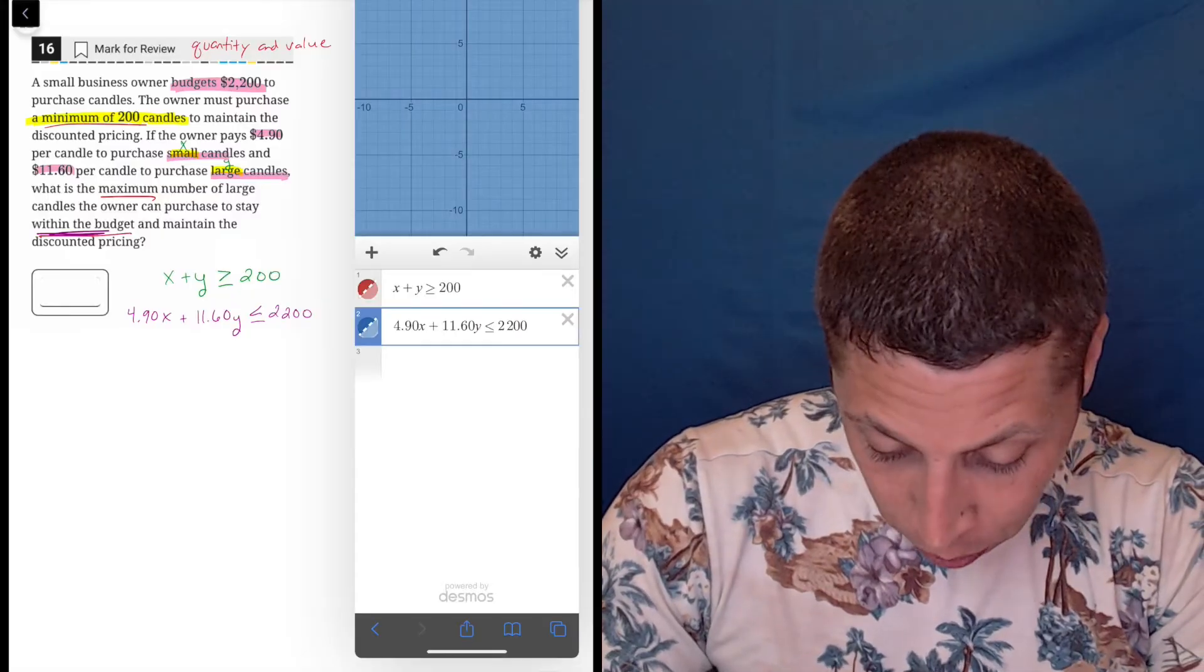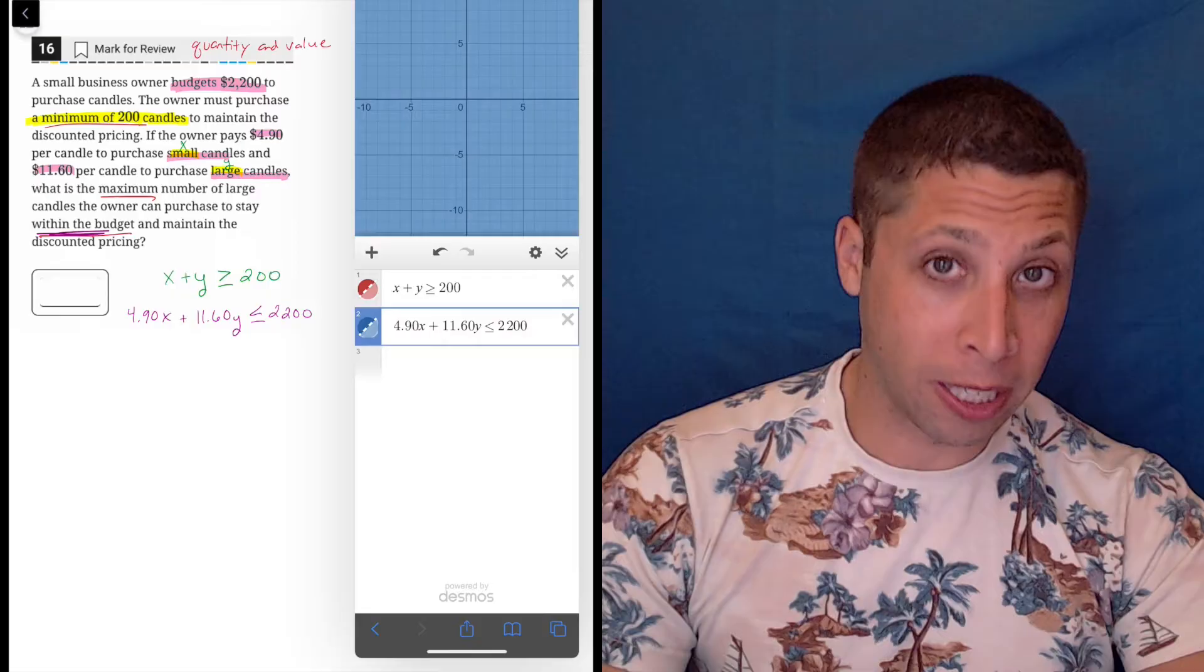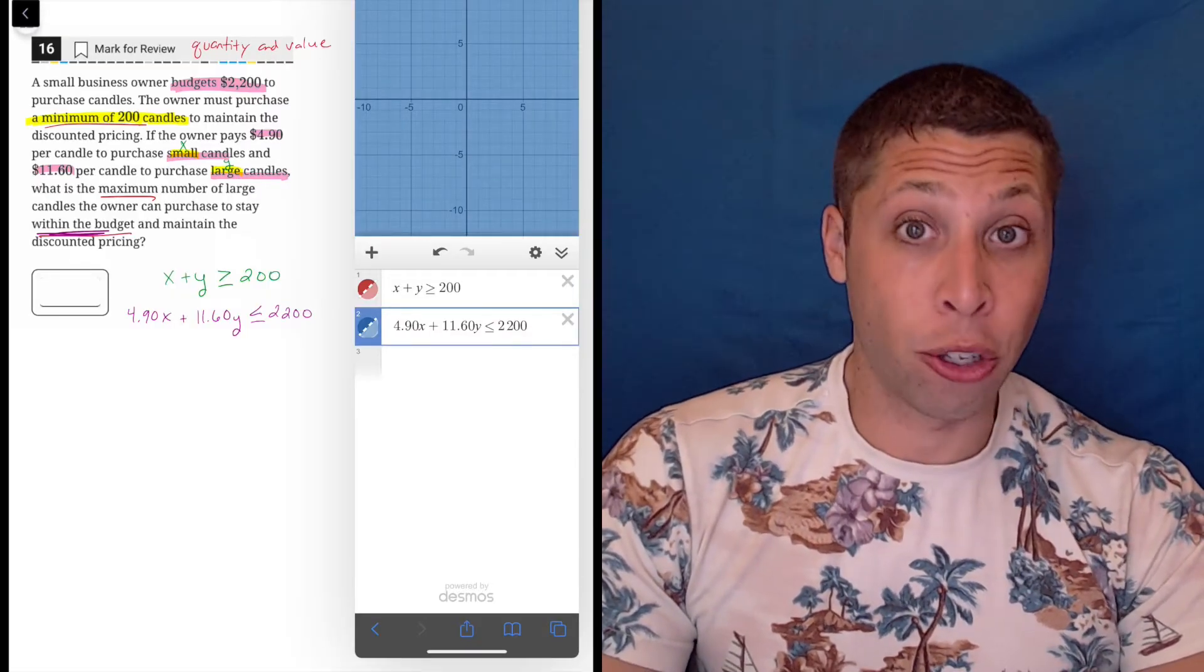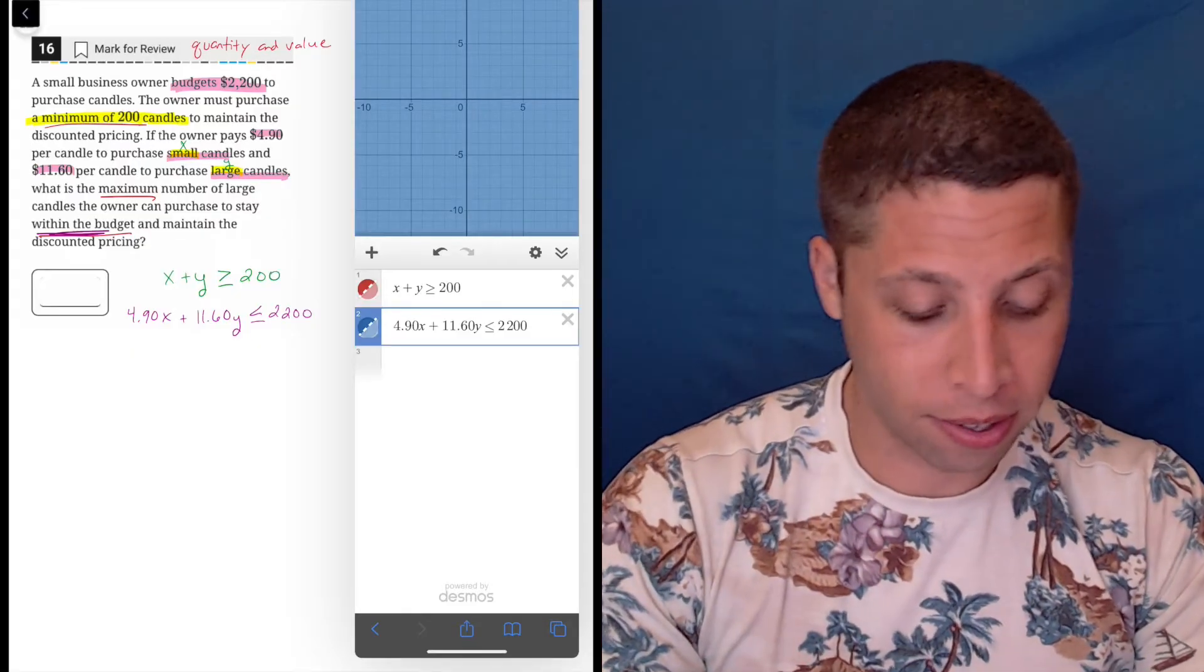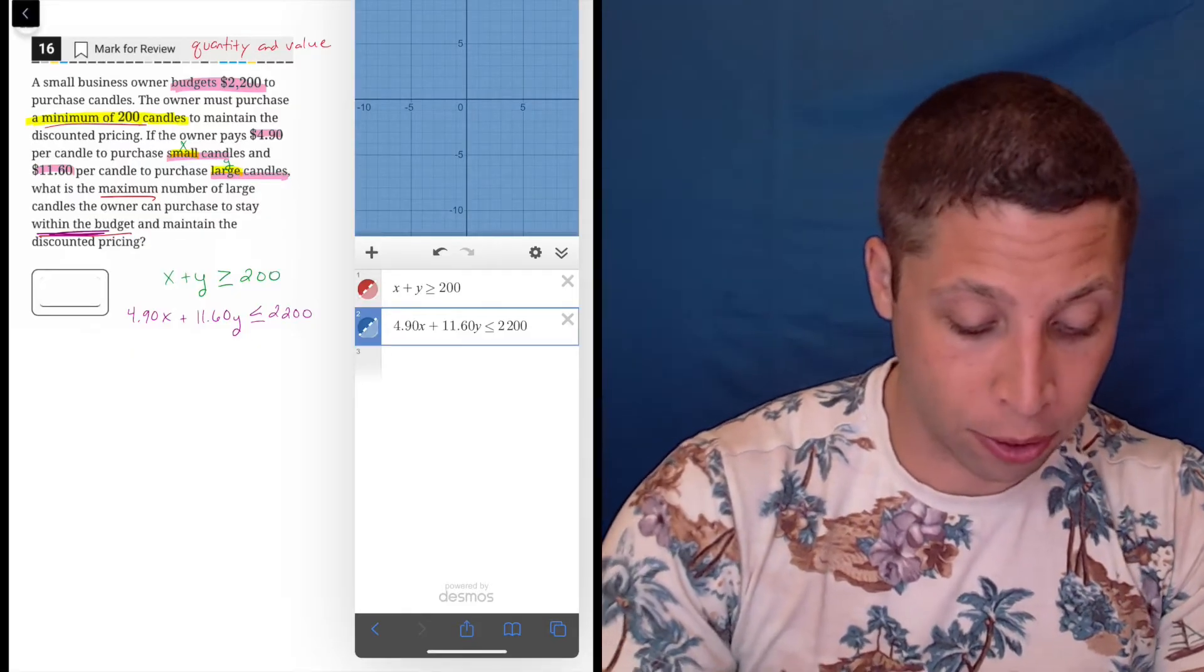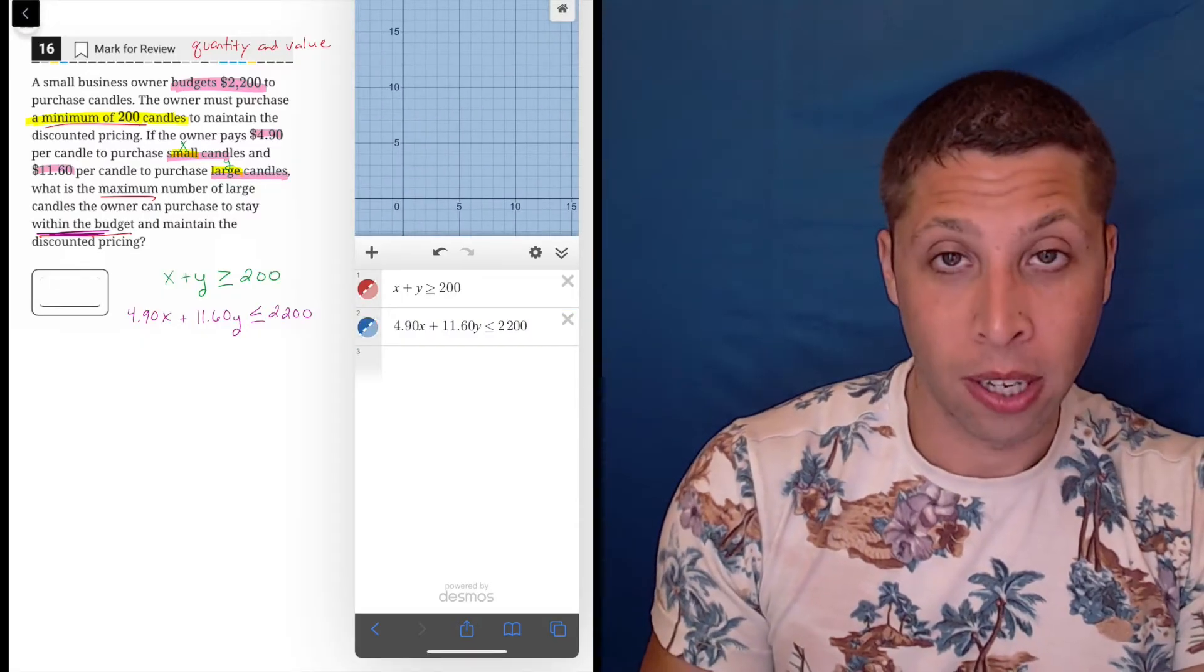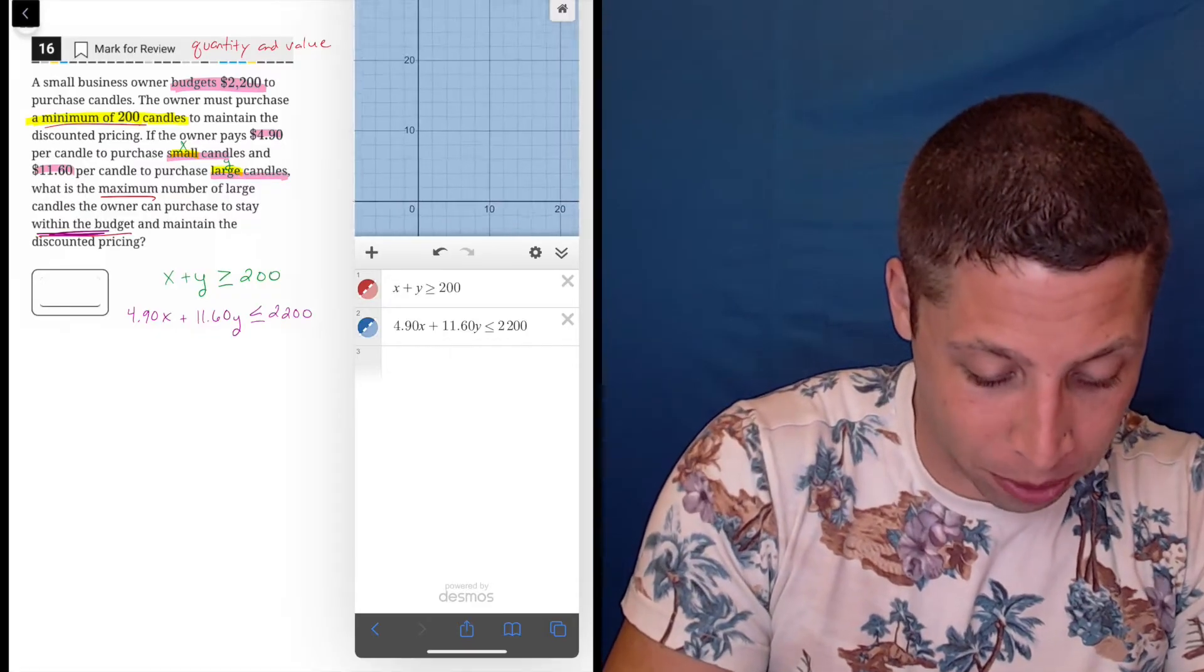X plus Y is greater than or equal to 200. 4.9... Yep. These are exactly what I wrote. So good. Now you'll see everything is blue. I need to zoom because these are some big numbers, right? 2200 is a huge number. So I got to find where this thing kind of really does its thing. Now the good thing is if it's a story, we're always going to be in that first quadrant because, well, there's no negative number of candles. It can't happen. So we're going to be in the first quadrant.